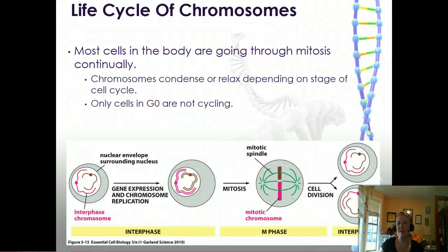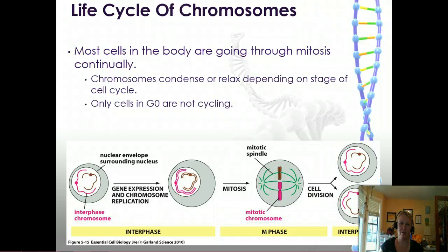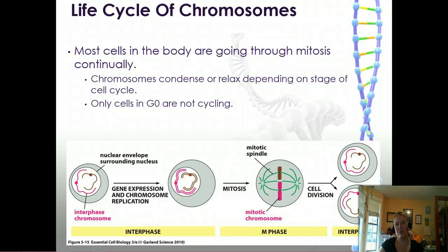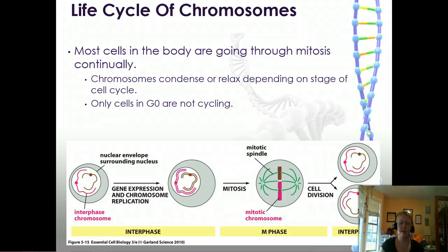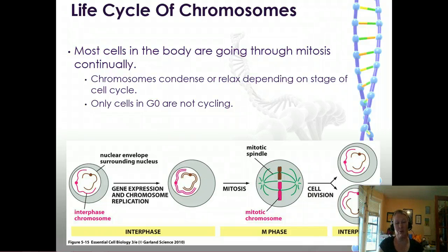Let's talk about the life cycle of chromosomes. Most of the time, chromosomes are fairly condensed within the cell, but not highly condensed enough to be seen under the light microscope. Almost all cells are continually going through mitosis, meaning they're either in interphase or some part of M phase, and they will condense and relax throughout the cell cycle. The only cells not cycling are G0. There is constant opening, closing, replication, and reading of the DNA.